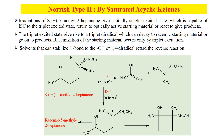Here is a Norrish type 2 reaction by a saturated acyclic ketone — specifically 5-methyl-2-heptanone. Initially it is in the singlet state as shown here. Similar to the previous example, this H is shifted to the oxygen and the bond cleavage occurs between alpha and beta. So one product is alkene and the other is enol which is tautomerized to the keto form.